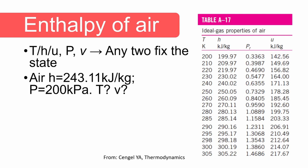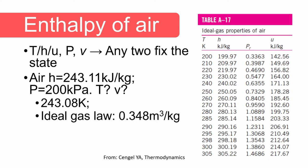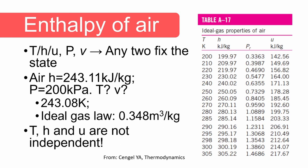Let us do an example. The enthalpy of air at 200 kPa is 241.1 kJ per kilogram. Determine the values of temperature and specific volume. We can solve this problem by using the table. We see that the enthalpy value supplied to us is between two of the tabulated values, and we will have to interpolate to find the temperature of the air. We can then use the ideal gas law to determine the specific volume. Note that temperature, enthalpy, and internal energy are not independent of each other — once you specify the value of one, the others are fixed.